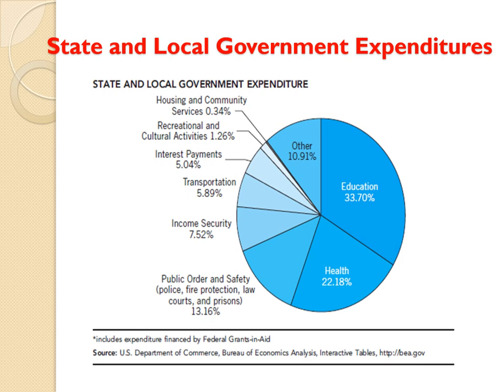Looking at state and local government expenditures — the other part of total government spending — government expenditures are split into two parts: federal, and state and local. For state and local, the main item is education, representing 33.7%. Healthcare is 22.1%, transportation is 5.8%, and interest payments are 5.04%, and so on.